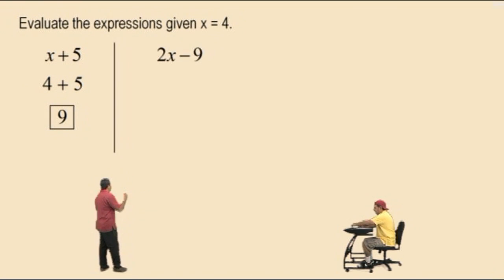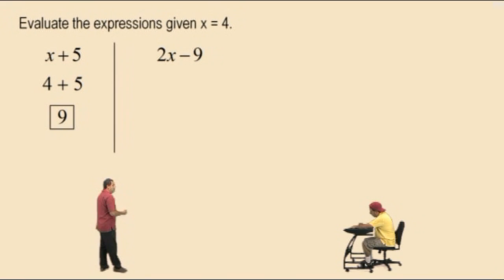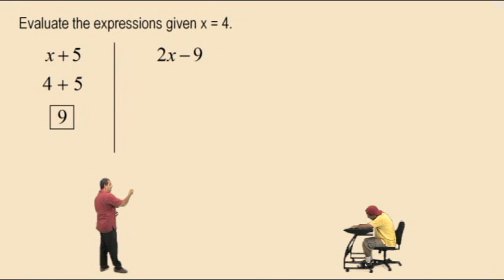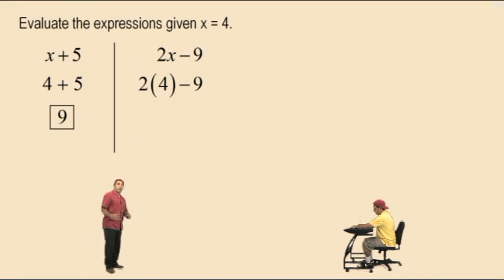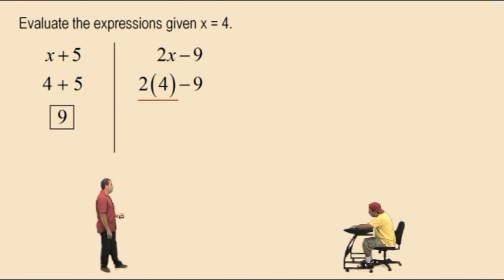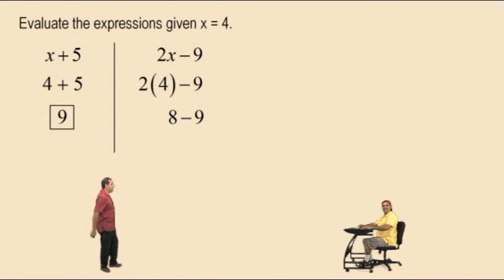Let's do another one: 2x subtract 9. Remember, 2x means 2 times x. So we're going to substitute the x with a 4 — it's 2 times 4 — and then subtract 9. Order of operations says we must do the multiplication first. So 2 times 4 is 8, bring down subtract 9. Charlie, what's 8 subtract 9? Negative 1. Very nice.